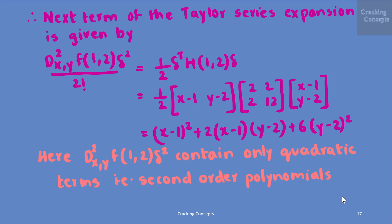Therefore the second order term of the Taylor series expansion is f⁽²⁾(x₀)·δ²/2! = (1/2) δᵀ H(1,2) δ. Substituting δ = [x−1, y−2]ᵀ and H = [[2,2],[2,12]], we obtain this quadratic expression, which contains only second order polynomial terms.